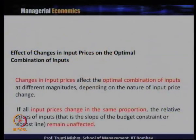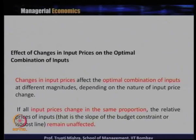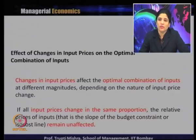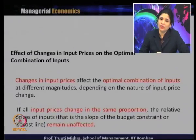Let us look at the case where if there is a change in the input prices, how it affects the least cost input combination. A change in input price affects the optimal combination of inputs at different magnitudes depending on the nature of the input price change. If all input prices change in the same proportion, the relative prices of inputs — that is, the slope of the budget constraint — may remain unaffected.